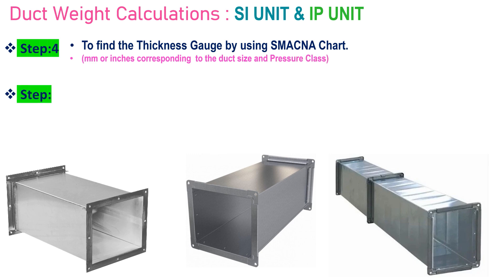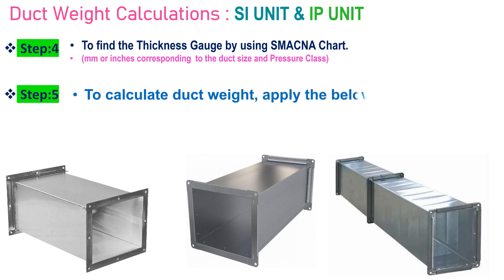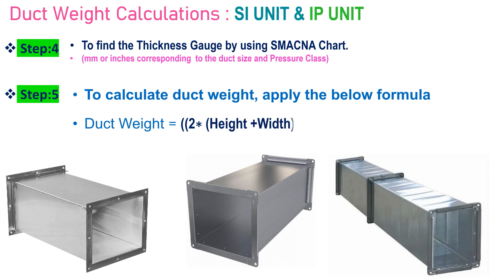Step 5: To calculate duct weight, apply the following formula. Duct weight equals: multiply the sum of the height and width by 2, multiply again by the length and thickness, then finally multiply by the density.